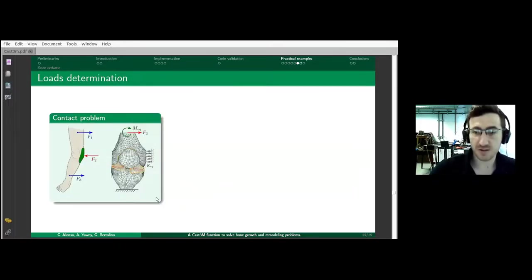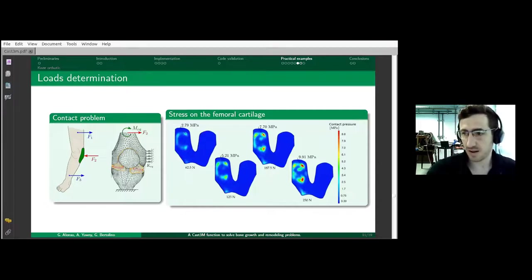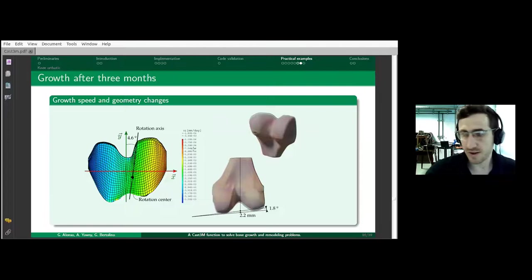What we were interested in was computing the effect of an orthotic device. Essentially, the orthosis exerts a set of forces on the patient's leg. These forces can be reduced to an elastic support, a force and a torque acting on the joint. We can now compute the stress distribution. This is the femoral cartilage. These are the contact stresses computed due to these loads, and evaluate the effect of the magnitude of the load exerted by this orthotic device on growth.